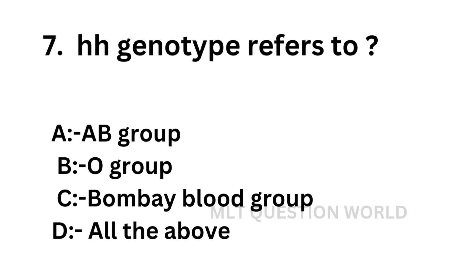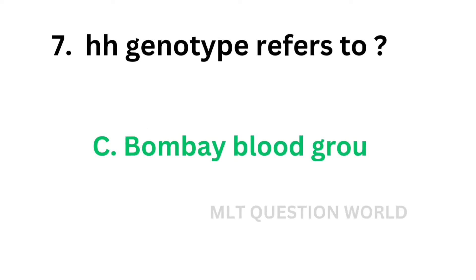Question number 7: HH genotype refers to — option A: A group, option B: O group, option C: Bombay blood group, option D: All of the above. In homozygous HH individuals there is no H gene, so H substance is not present. They do not have A, B or H antigens and only possess the HH genotype. It is called the Bombay blood group. The correct answer is option C, Bombay blood group.